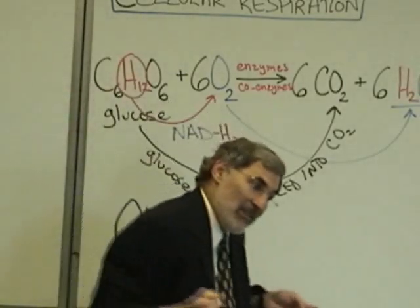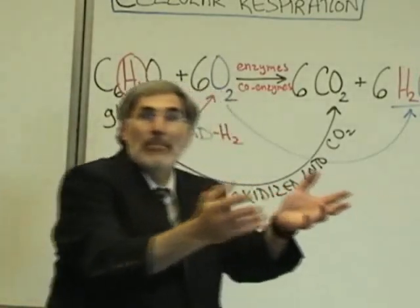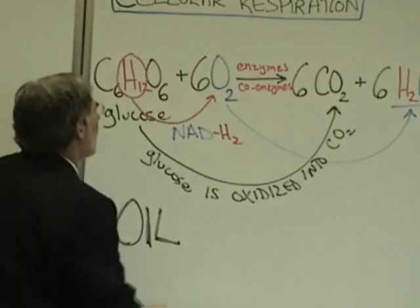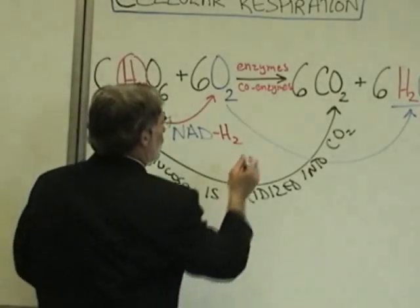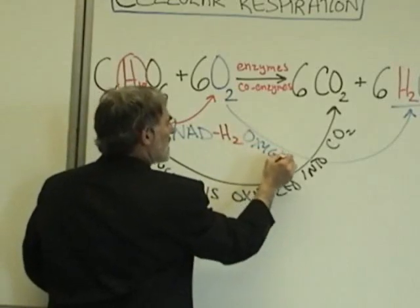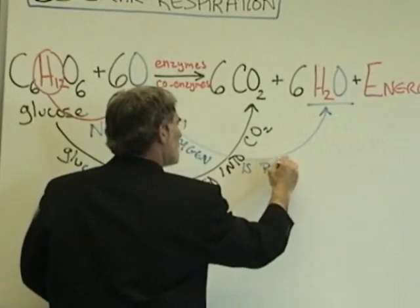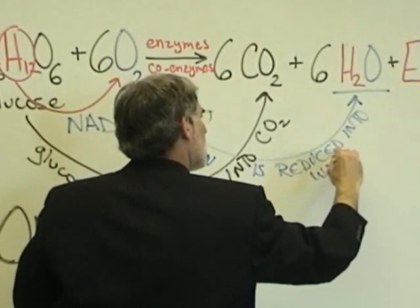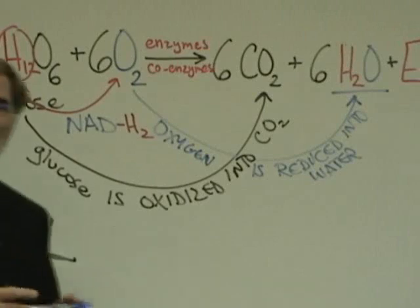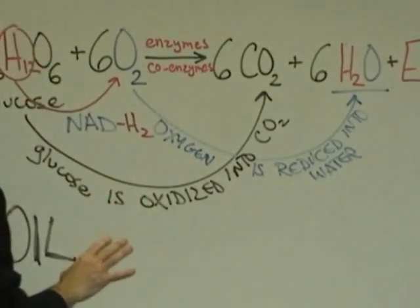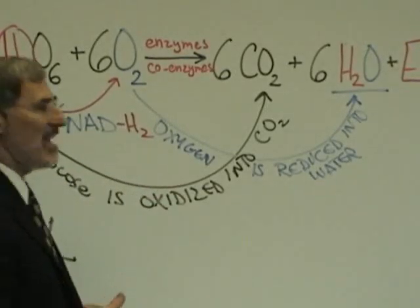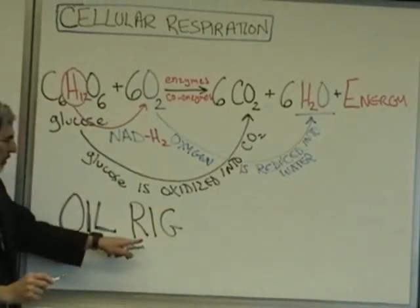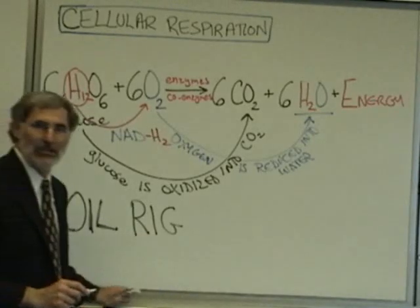Whenever one molecule is giving away hydrogen atoms and electrons, somebody else is gaining them. Who gained the hydrogen atoms and electrons? Oxygen. We would say that oxygen is chemically reduced into water. This term 'reduced' has nothing to do with losing weight — it is a special technical term referring to the gaining of hydrogen atoms and electrons by a molecule. Just remember RIG: Chemical Reduction Is a Gain in hydrogen atoms and electrons.